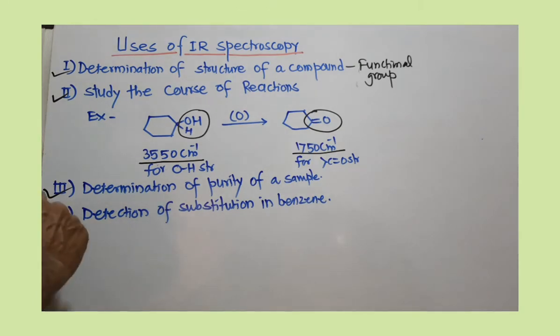The next very important application is detection of substitution in benzene. Whether the benzene is ortho-substituted, meta-substituted, or para-substituted, we can decide by just studying the IR spectrum of these three isomers.